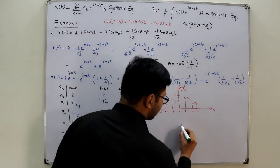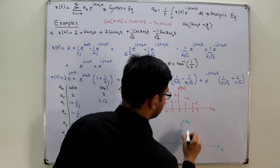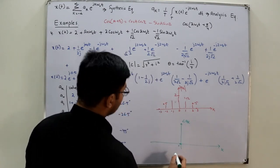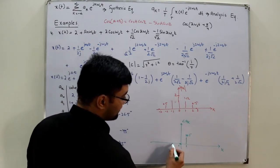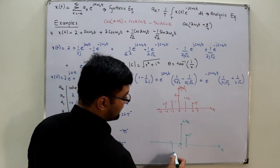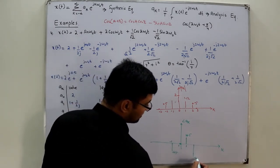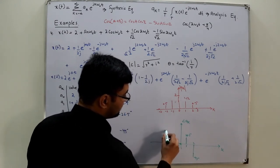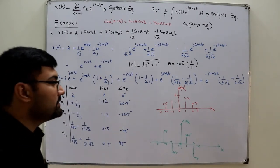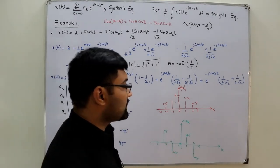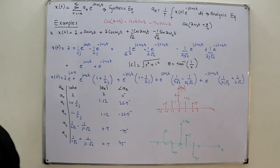For the phase spectrum: at k=0 the phase is 0°, at k=1 it is +26.5°, at k=−1 it is −26.5°, at k=2 it is −45°, and at k=−2 it is +45°. As seen in the previous video, the phase spectrum is an odd function of k — time-reversing gives the negative values. That's it for this question.